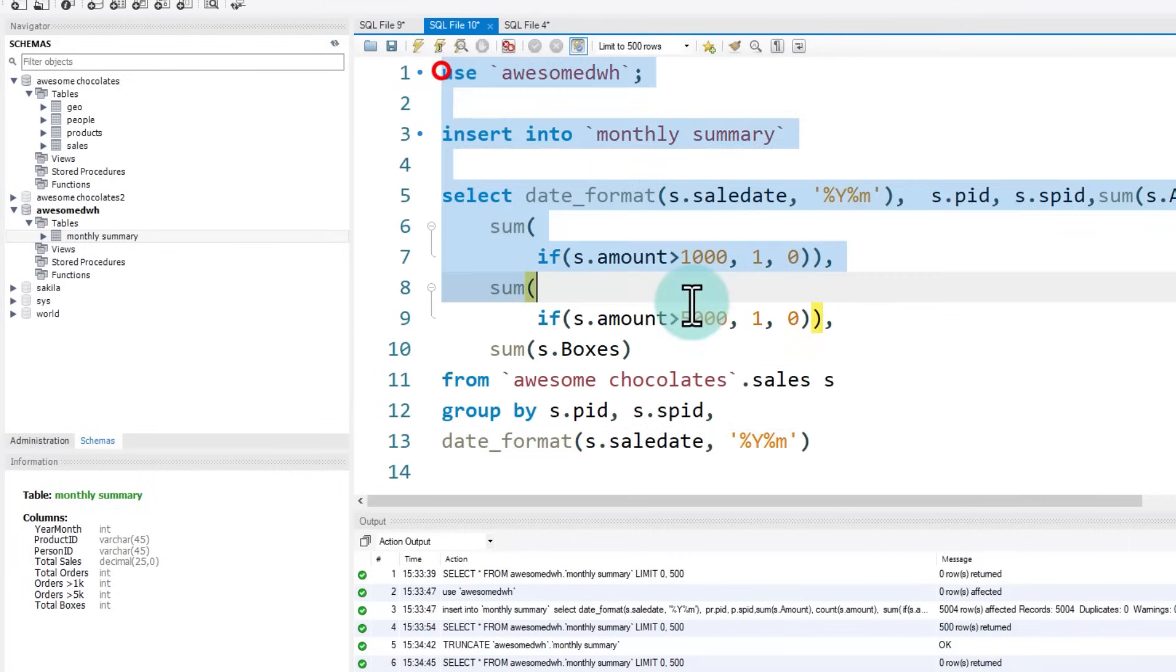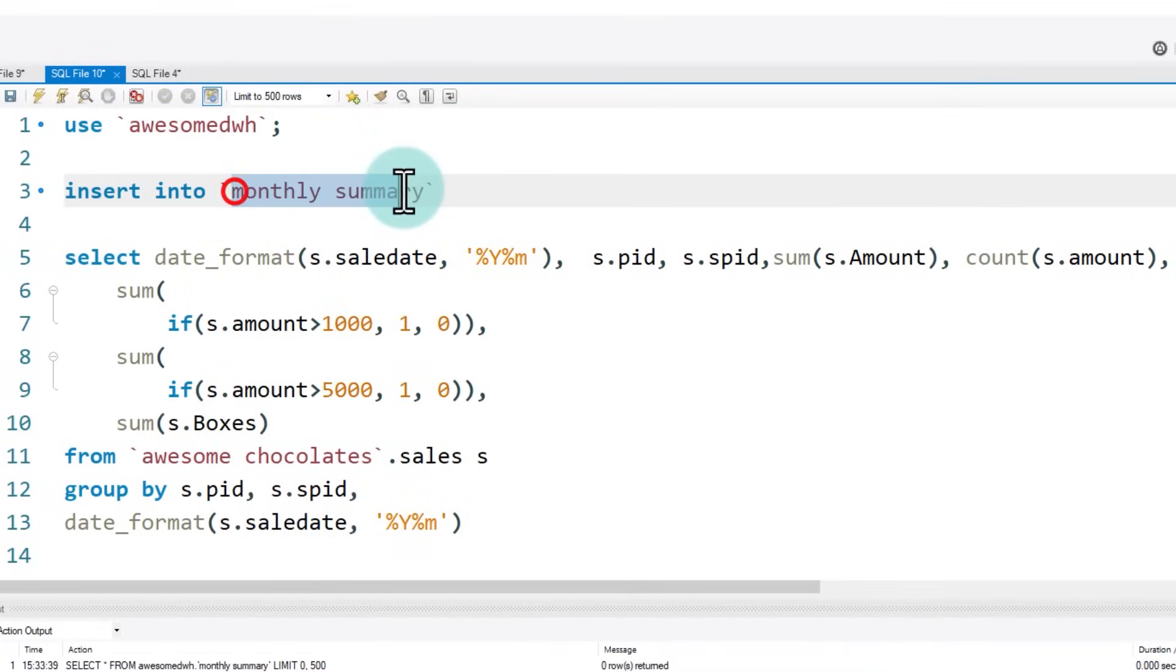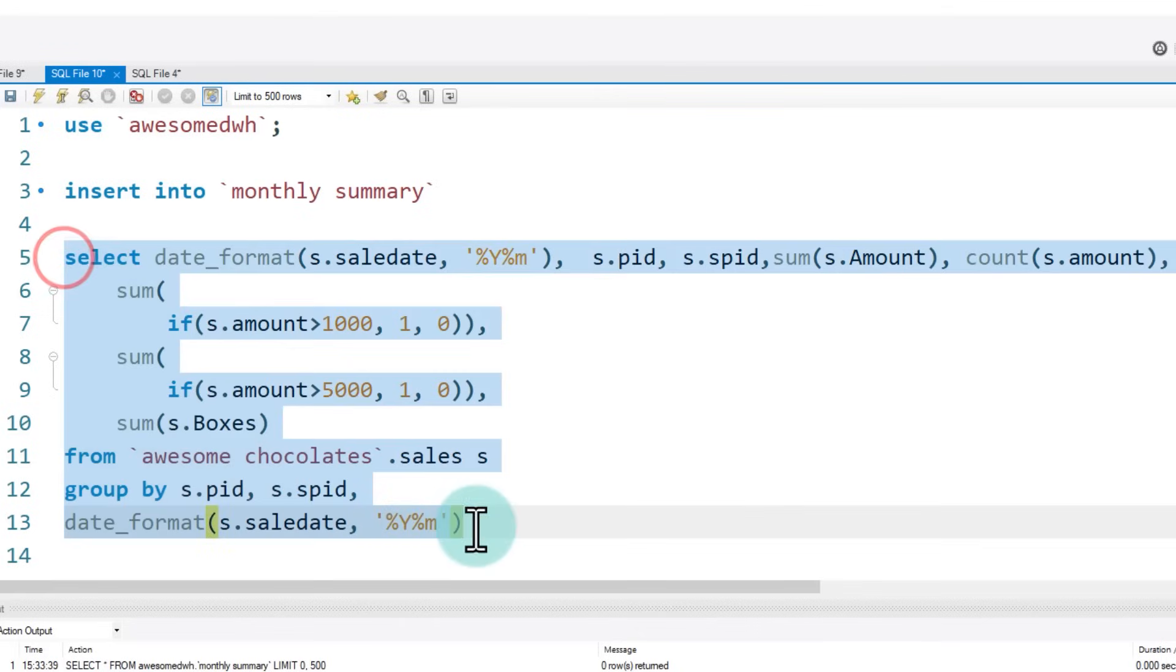So to create this and load these rows into this monthly summary, here is the SQL script that I'm using. We'll start by saying use awesome data warehouse. So that is the data warehouse that will be used. And then insert into the monthly summary warehouse table by applying these transformations. The transformations are all done through a single SQL because this is a relatively simple ETL job.